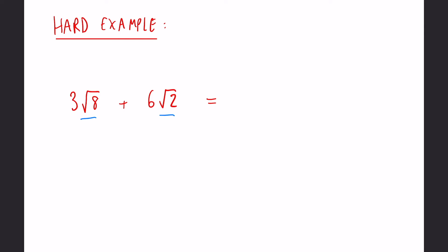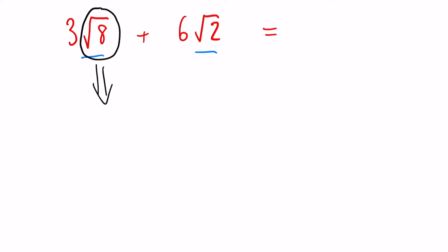However, always double check, can you simplify any of the surds? In this case, we can. So this square root of 8, we can write it as root 4 and root 2.